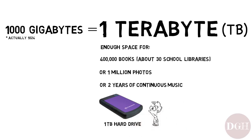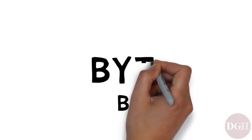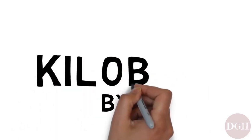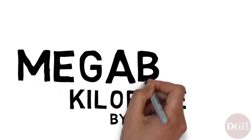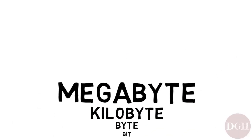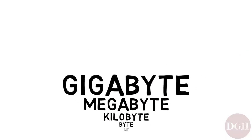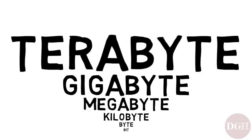To recap: we talked about bits, how there are eight bits in one byte, how there are a thousand bytes in one kilobyte, a thousand kilobytes in one megabyte, a thousand megabytes in one gigabyte, and a thousand gigabytes in one terabyte. I hope you've enjoyed this video and that you have a better understanding of digital storage terminology.